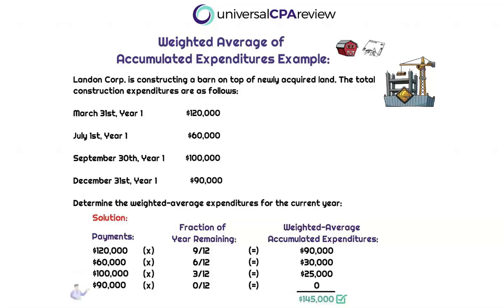Finally, the last payment was made on the last day of the year, so there's no time left — that's going to be zero. So now we can calculate the weighted average accumulated expenditures for the current year: $90,000 plus $30,000 plus $25,000 gives us a total of $145,000. Step one is complete.